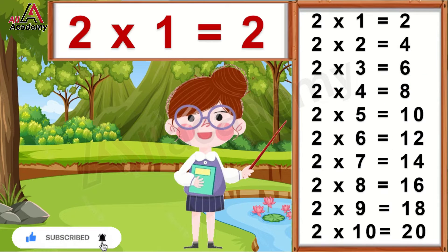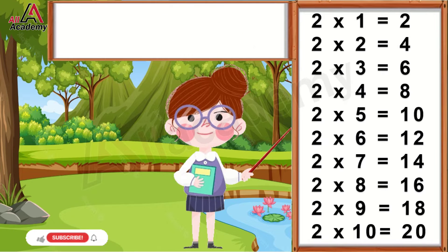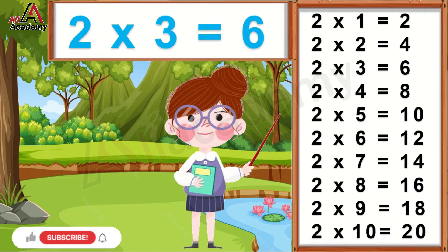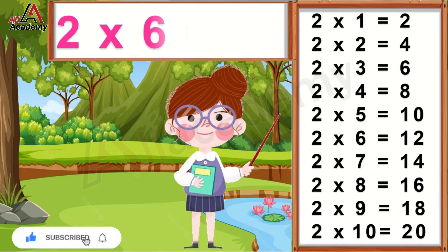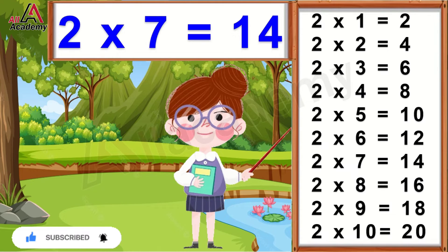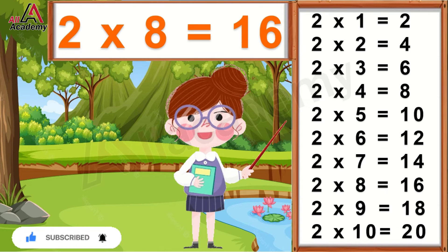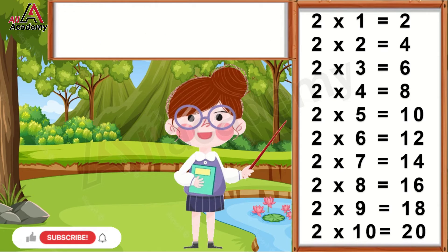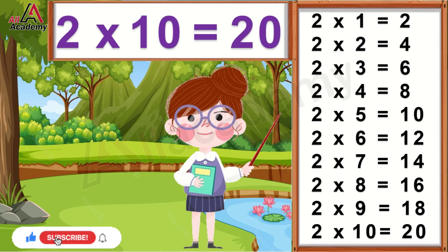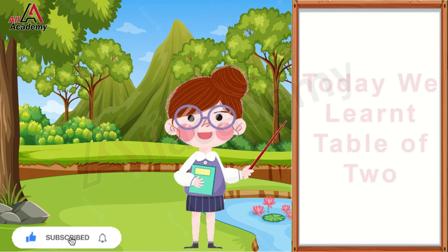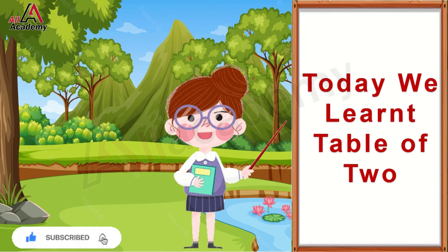2×1=2, 2×2=4, 2×3=6, 2×4=8, 2×5=10, 2×6=12, 2×7=14, 2×8=16, 2×9=18, 2×10=20. Today in this video we learned table of 2.